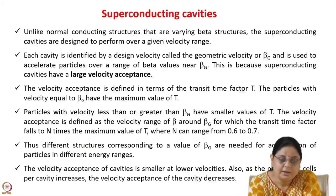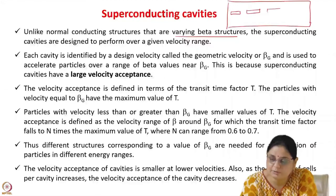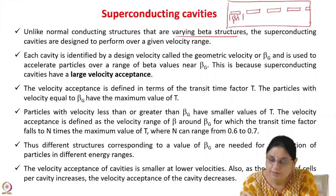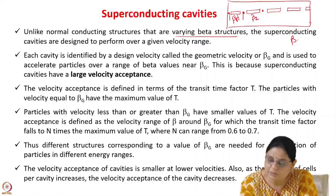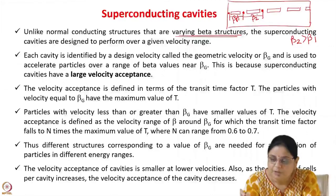Unlike normal conducting cavities that are varying-beta structures, let us consider a drift tube linac. The cell length is defined as the distance from the center of one gap to the center of the next gap, equal to βλ. As the charged particle gains energy at each gap and moves from cell to cell, β increases — so β₁ here becomes β₂ at the next cell, where β₂ > β₁. Every time the particle is accelerated, β increases. Therefore, normal conducting cavities are varying-beta structures and the cell length increases accordingly.